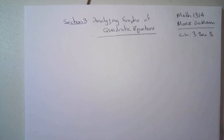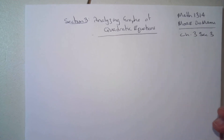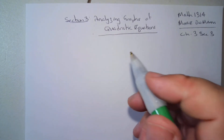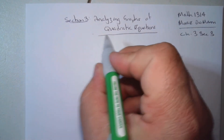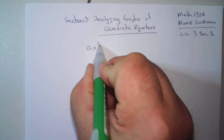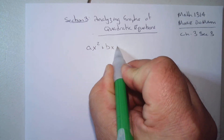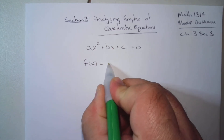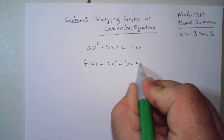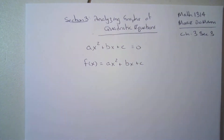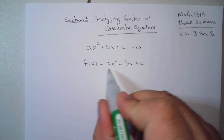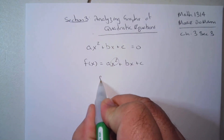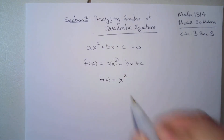Hello everybody, welcome back to Math 1314. Today we're going to talk about Chapter 3, Section 3: Analyzing Graphs of Quadratic Equations. Remember, the standard form of a quadratic equation, written as a function, is ax squared plus bx plus c. What makes it quadratic is that basic form.